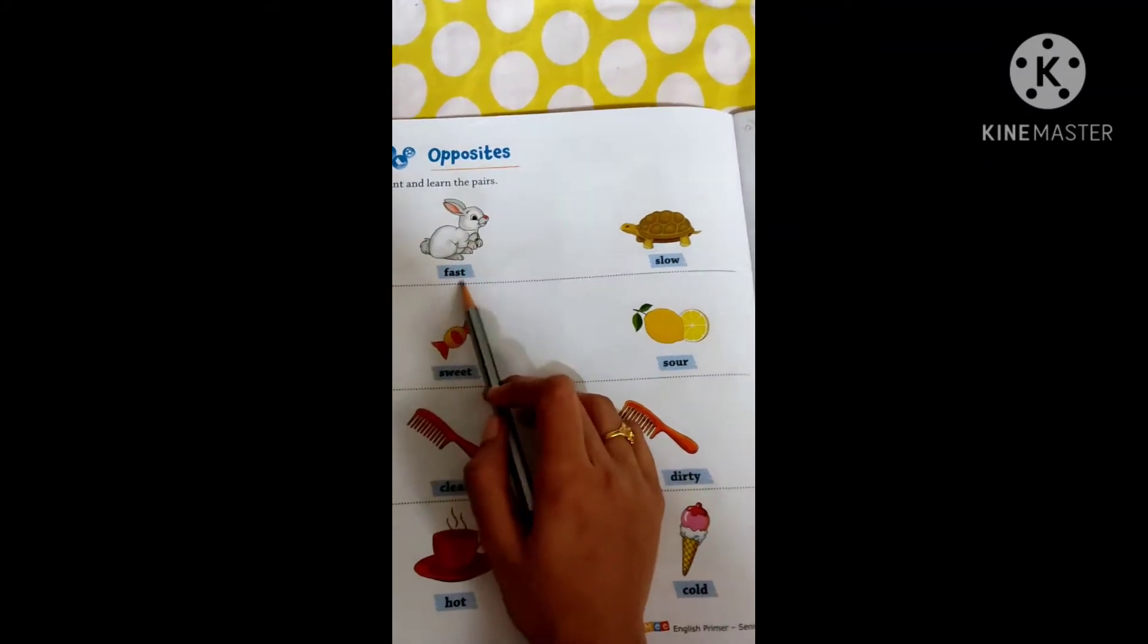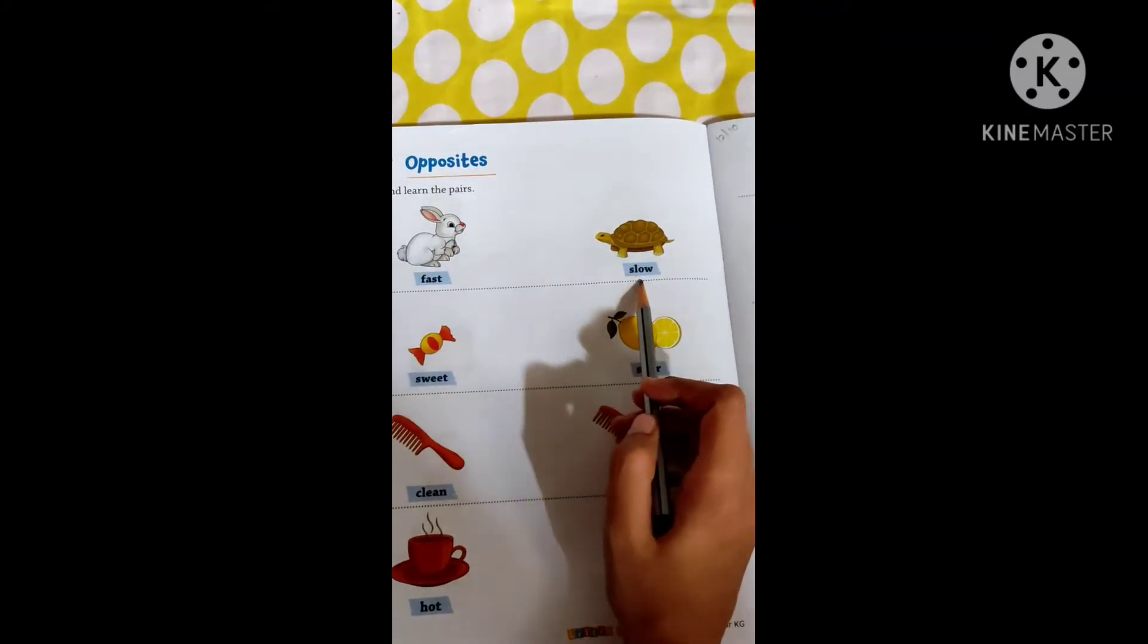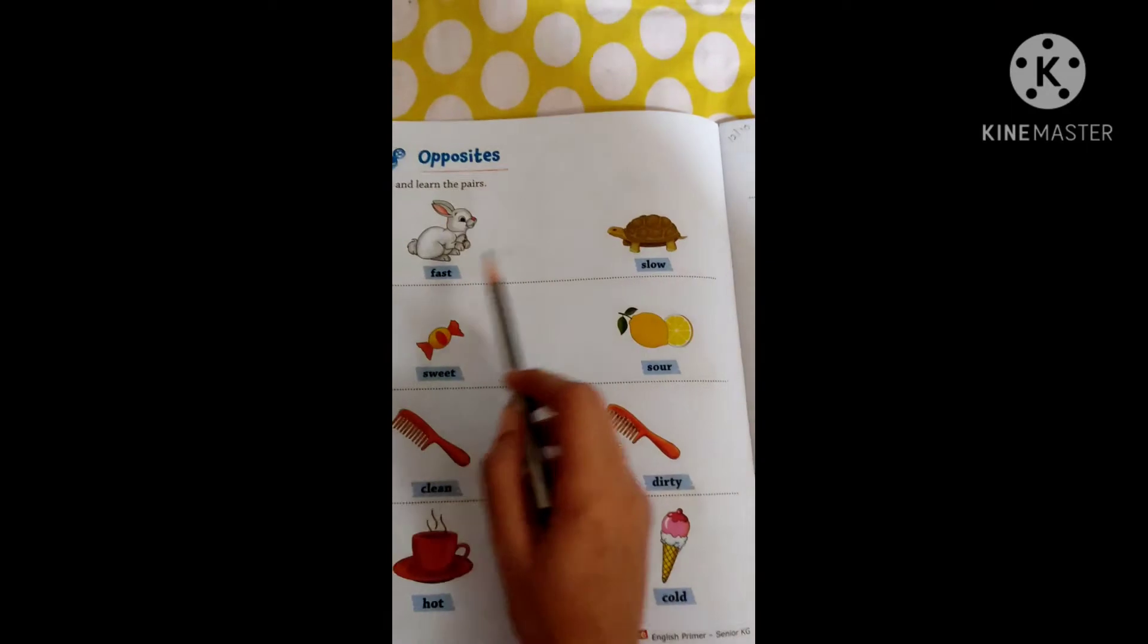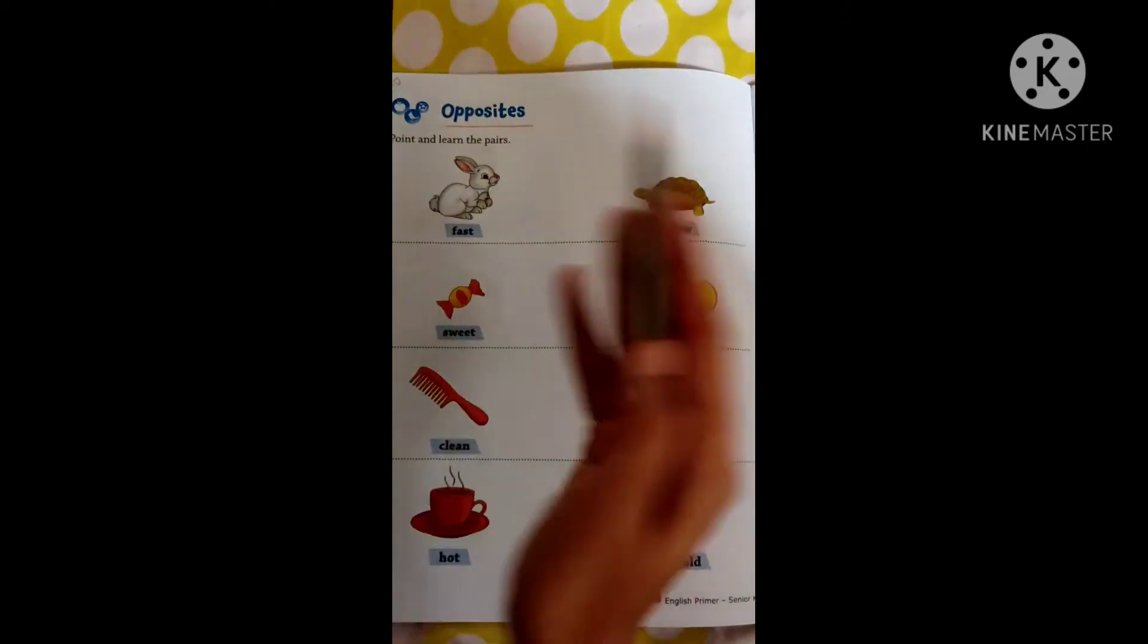Now rabbit, fast. Tortoise, slow. Now fast and slow, that is the opposite.